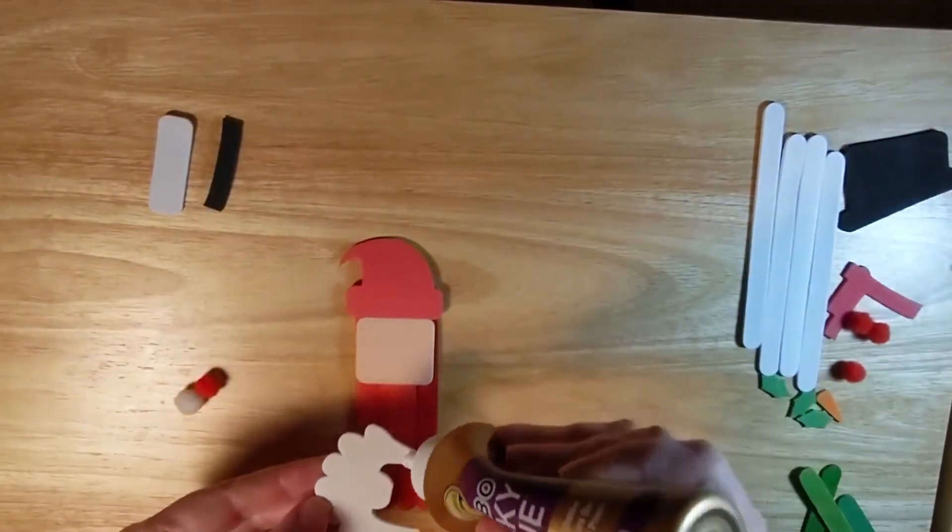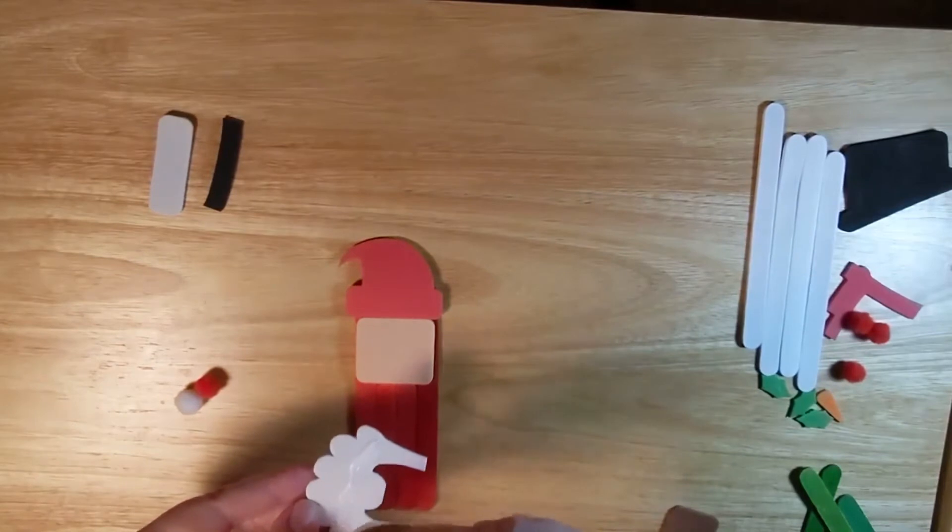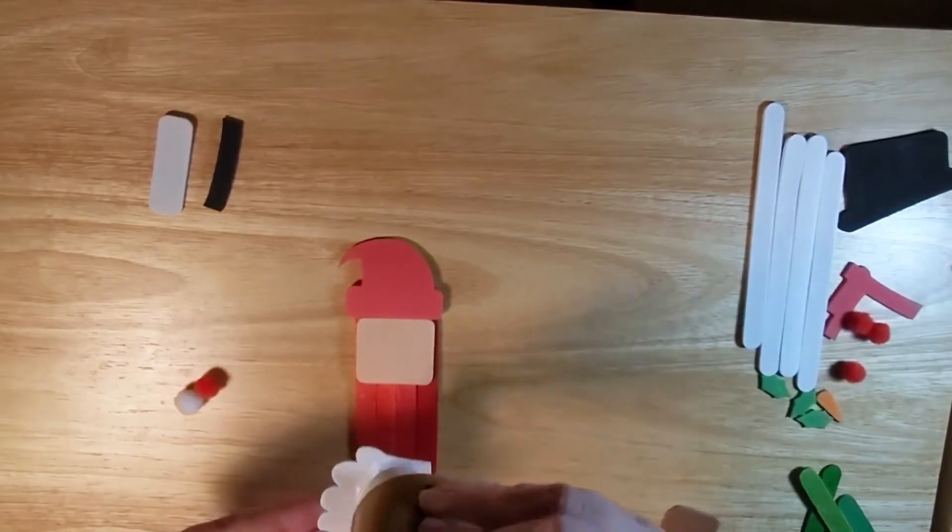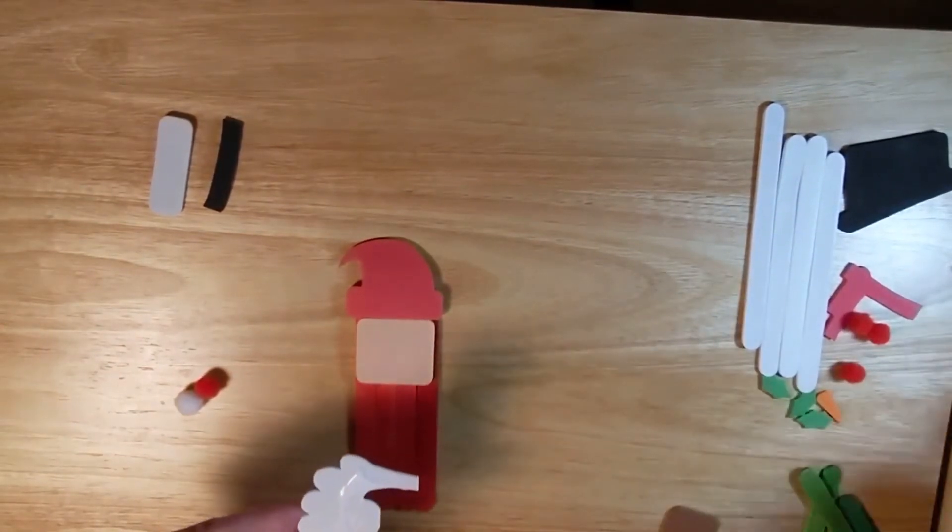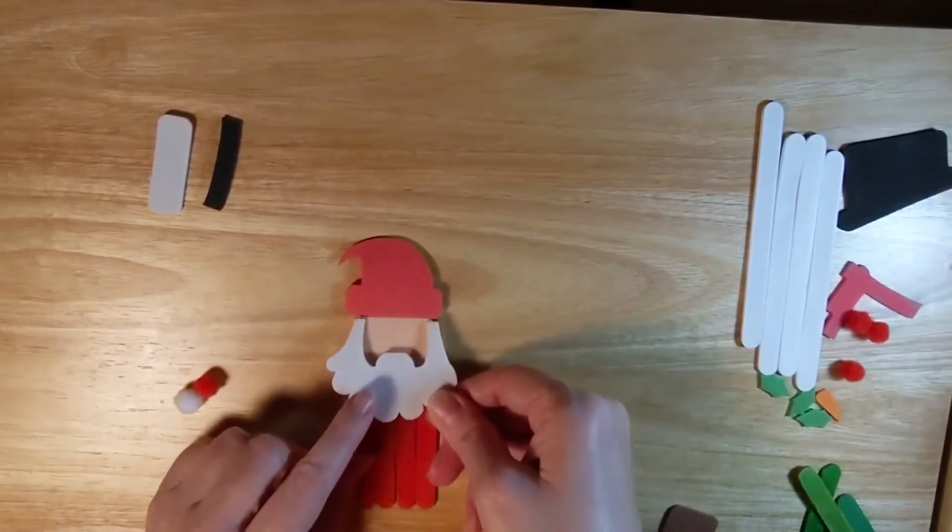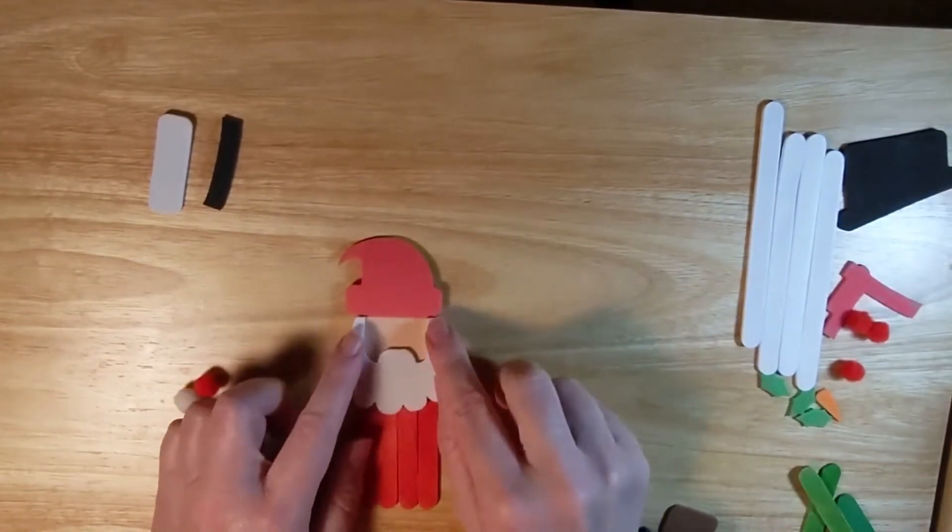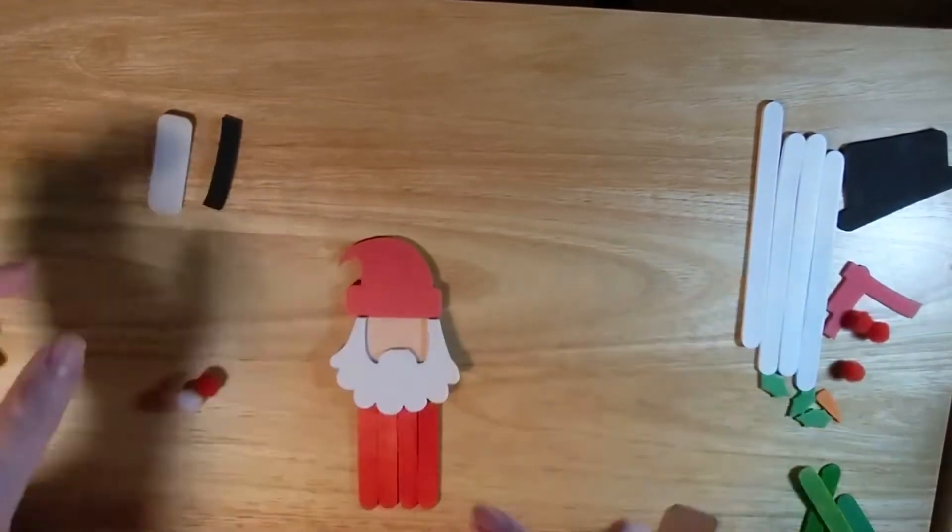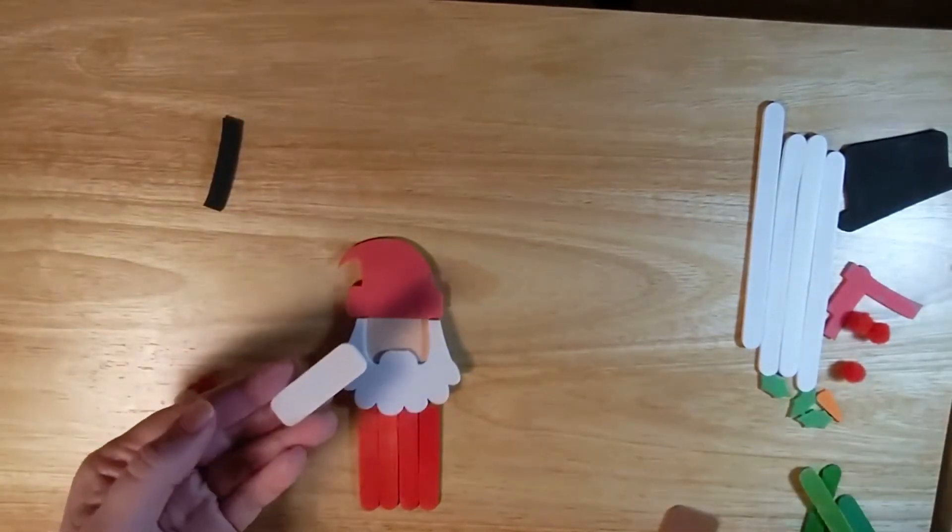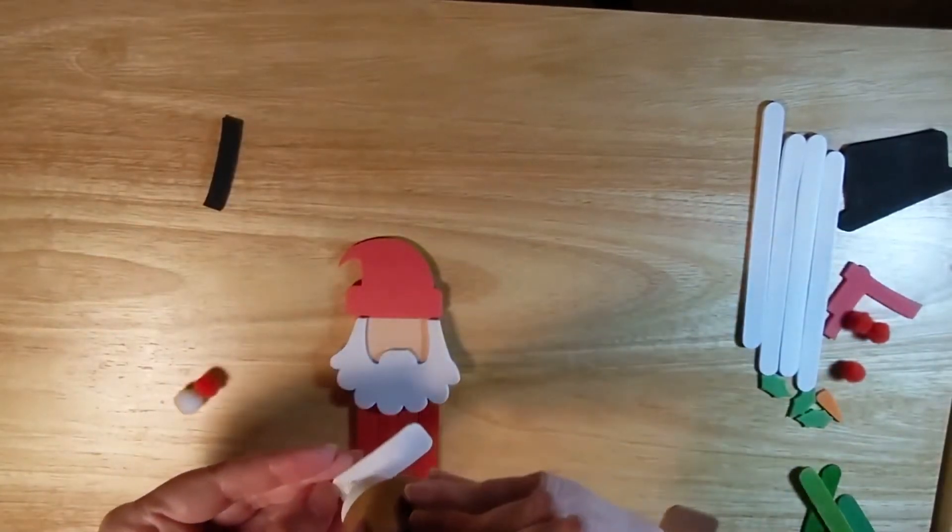Next is the beard. I got a little crazy with the shape of it - don't feel like you have to do that. Think about using cotton, anything like that, any fabric. Doesn't have to be foam or this shape. You're just wanting Santa's beard that covers his mouth.